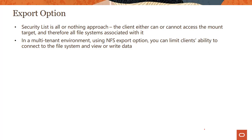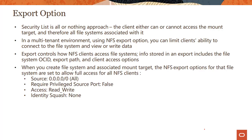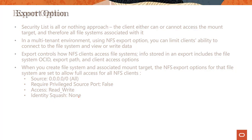In a multi-tenant environment, using NFS export options, you can limit a client's ability to connect to the file system and view or write data. When you create a file system and associate it with a mount target, the NFS export option gets created automatically — you don't have to create it. By default, it allows full access for all NFS clients: source is all IP addresses, privilege source port is false, read-write access is set, and identity squash is none.